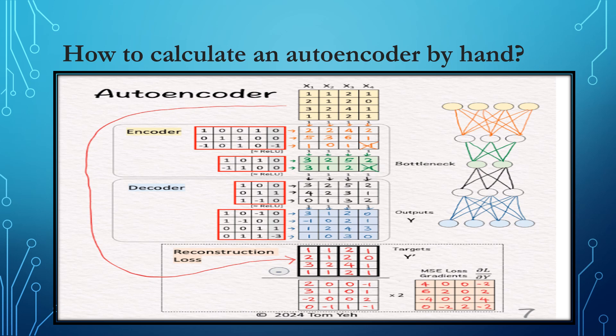Consider this network architecture: the encoder consists of Linear + ReLU layers, and the decoder also consists of Linear + ReLU layers. We are given four training examples x1, x2, x3, x4. We copy the training examples to the targets — the purpose is to train the network to reconstruct the training examples. Since each target is a training example itself, we use the Greek word 'auto,' meaning 'self.' This crucial step is what makes the autoencoder 'auto.'